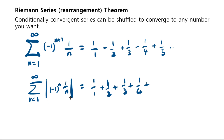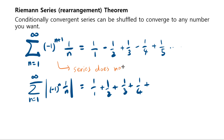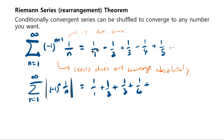If you take the absolute value of each term, then the series diverges. This means that this series does not converge absolutely. This absolute value function — if you apply that, it doesn't converge. However, without the absolute value, by itself it does converge.